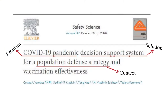Let's have a closer look at the title of a paper published in the Journal of Safety Science. The title says: 'COVID-19 pandemic decision support system for a population defense strategy and vaccination effectiveness.' Let's find where the problem is — COVID-19 itself is the problem. The context of application is the entire population. And the problem solution in this title is the decision support system.